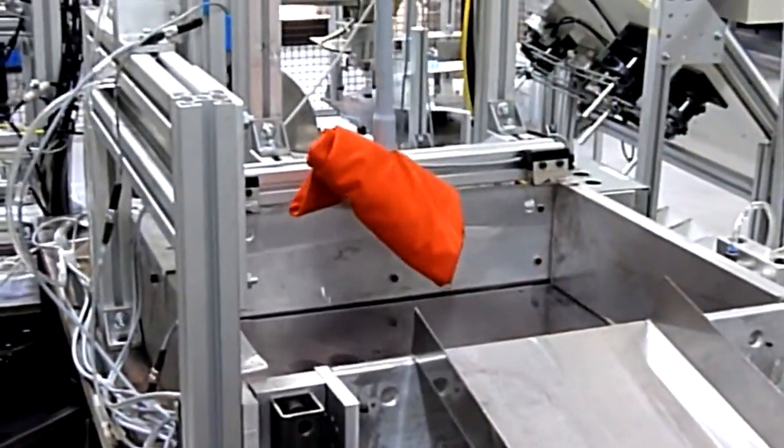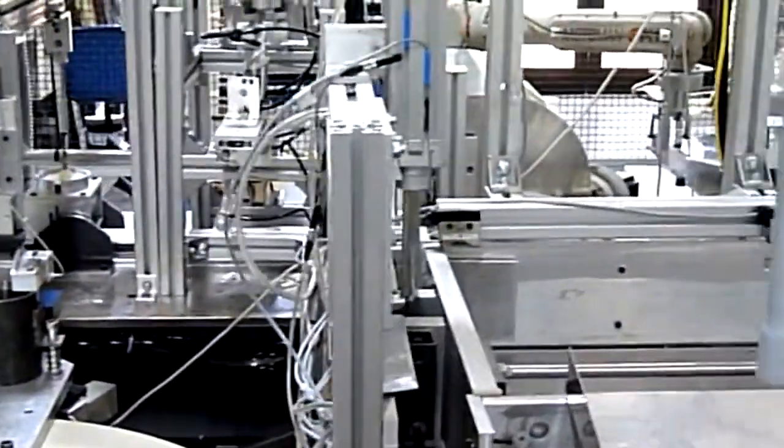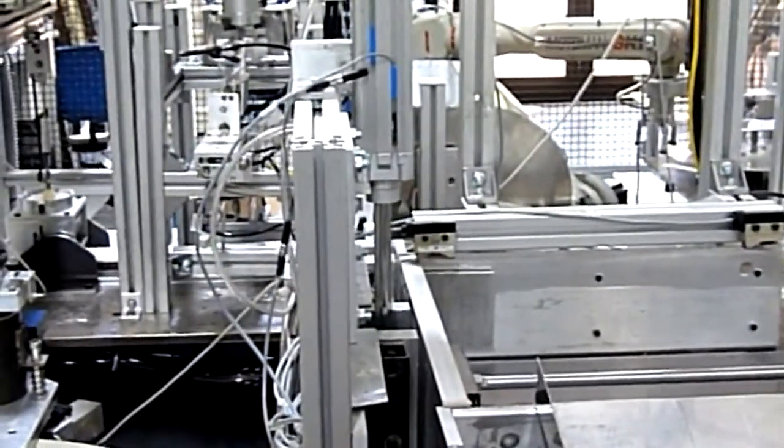A vacuum gripper carries our first t-shirt into the consolidation station where it is compressed over top of a small hole where a cylinder pushes it into our first compression tube.